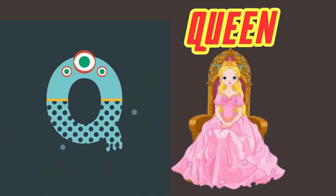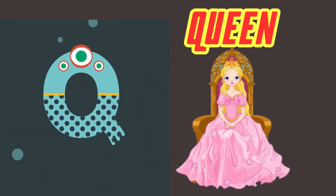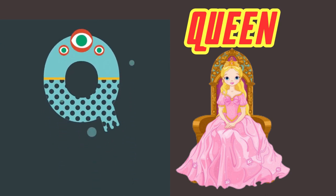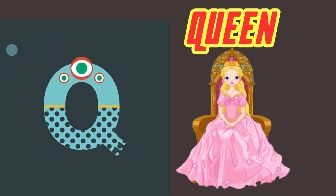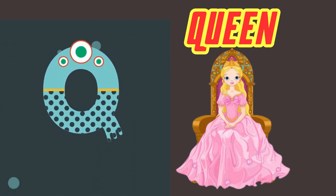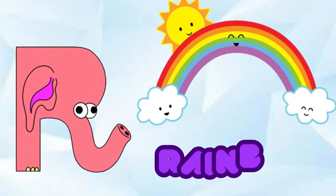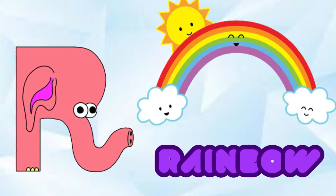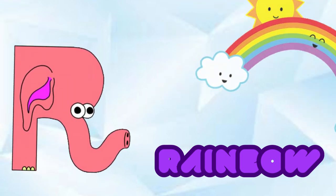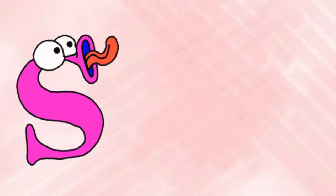Q is for Queen. Q-Queen. R is for Rainbow. R-R-Rainbow.